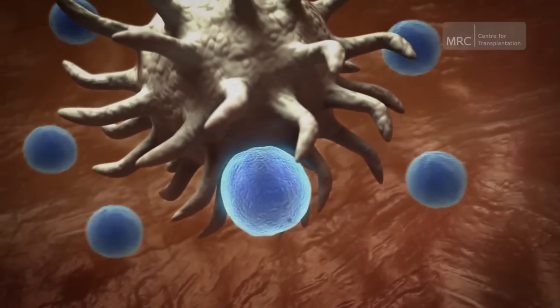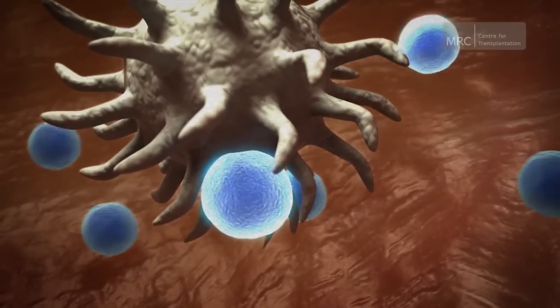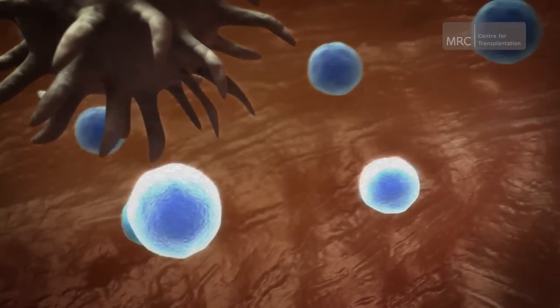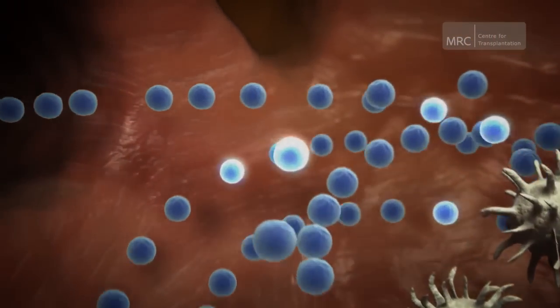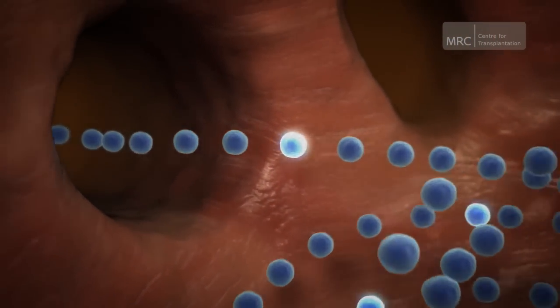Some T cells become activated. The body's defense mechanism has been triggered. The activated T cells, called effector T cells, start to multiply and go to the kidney and attack it.